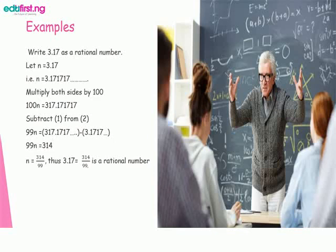Subtract equation 1 from equation 2. 99n equals 317.1717 minus 3.1717. Now these are our results: